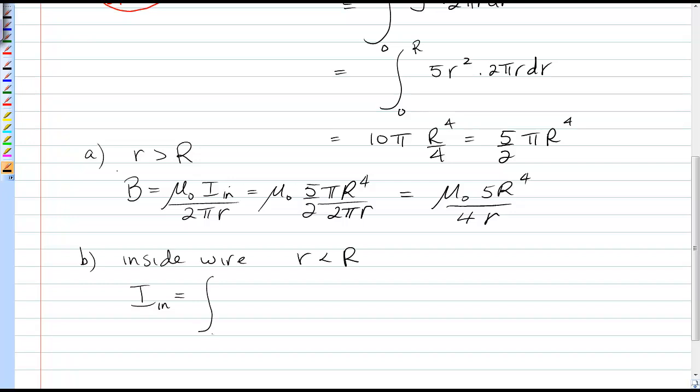So now, it's the same integral as above, but rather than stopping the integration at capital R, I have to stop at small r inside the wire. But it's the same integral. And instead of capital R now, I have small r to the fourth.